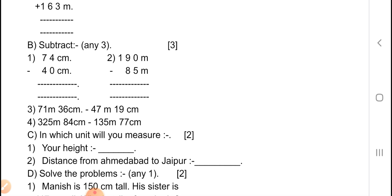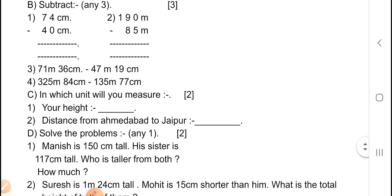Now C — in which unit will you measure? It carries 2 marks. In the questions it's given — distance from Ahmedabad, or your height — you have to write the unit in the blanks. You measure your height in meters or centimeters, whatever applies. First: your height. Second question: distance from Ahmedabad to Jaipur.